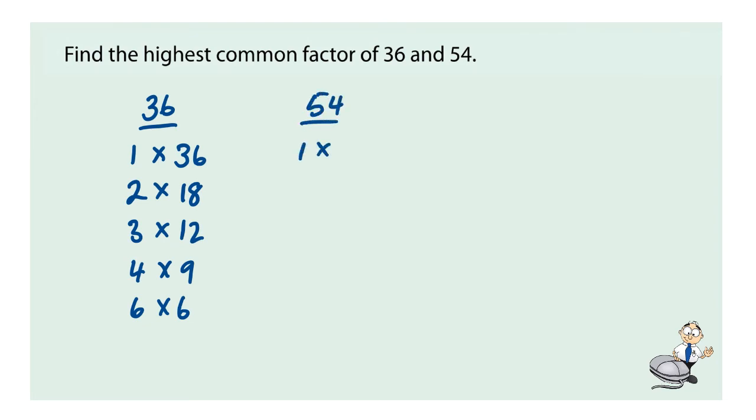We could use a calculator to help us if we didn't know these. 54, well 1 goes into 54 once, 2 27s are 54, 3 18s, 6 9s, 7 doesn't go in and 8 doesn't go in.